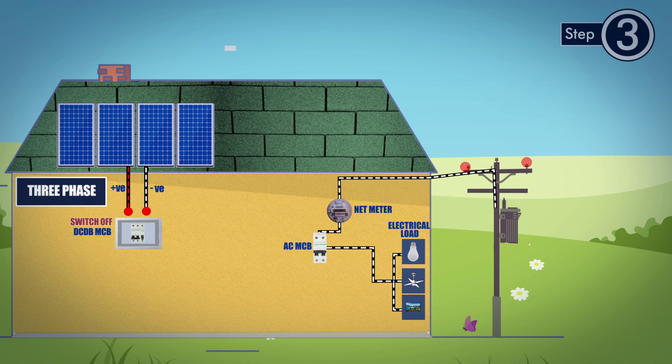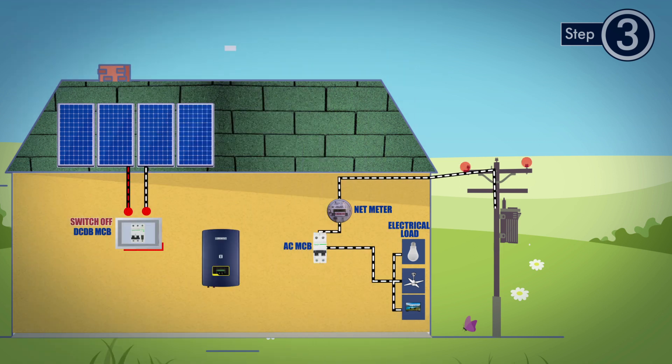To start the installation, first turn off the DC MCB in DC distribution box and connect the string wires coming from all the solar panels to DC distribution box.